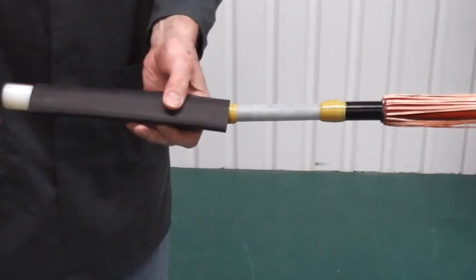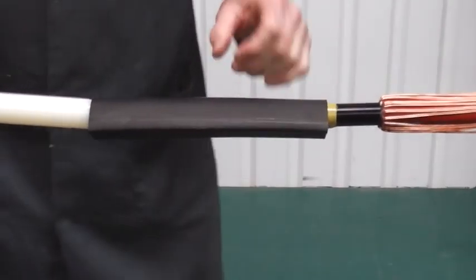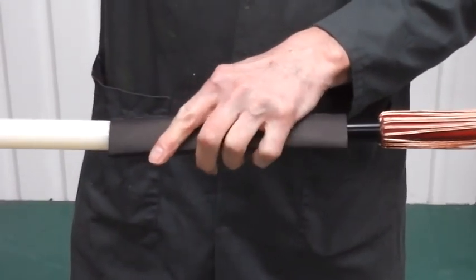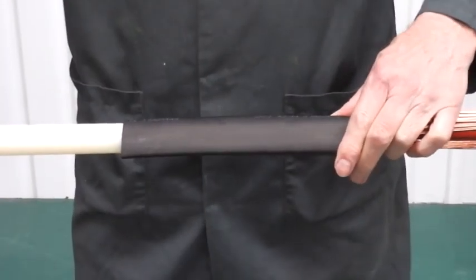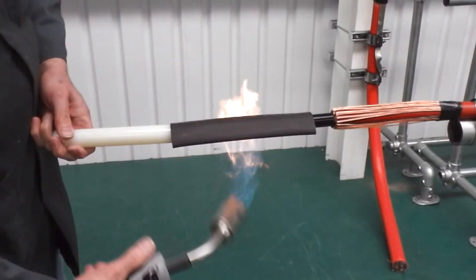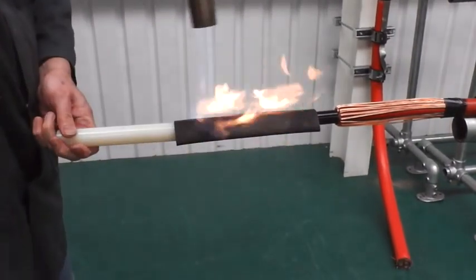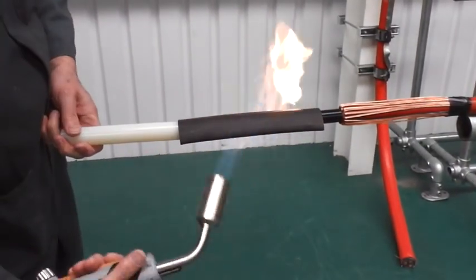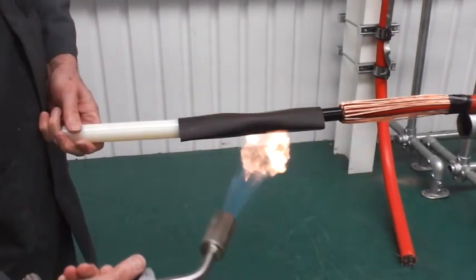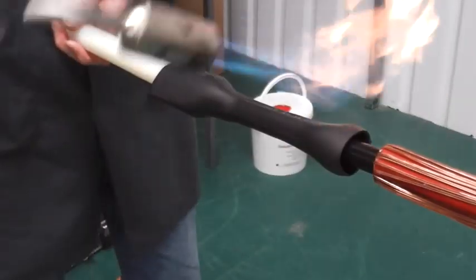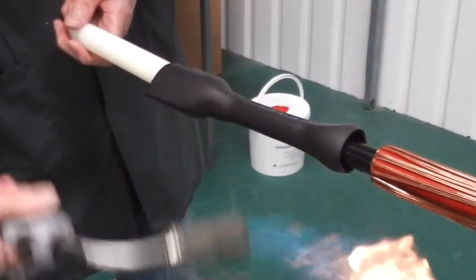It would be advisable to have some help from a colleague so that the rod remains in position. Now position the stress control tube so that it sits equally over each screen, and with a suitable heat source shrink from the centre to one end at a time.